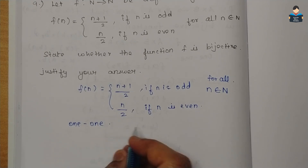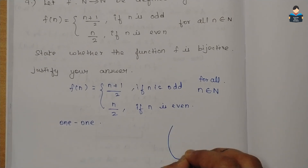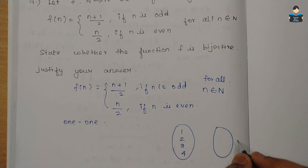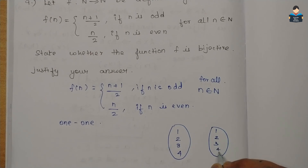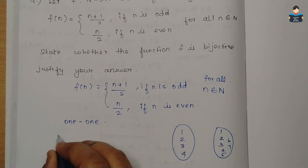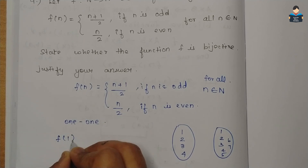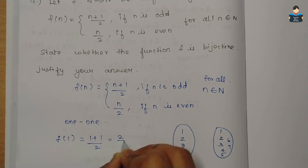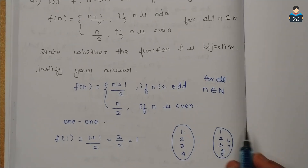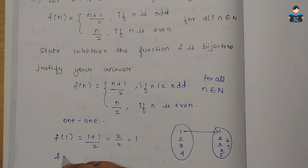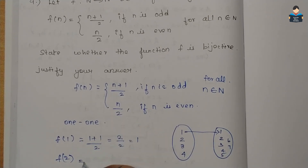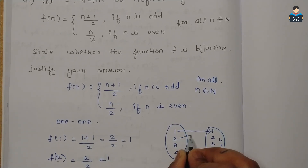For the one-to-one check, we use an arrow diagram. Natural numbers N = {1, 2, 3, 4, ...}. Substituting n = 1 (odd): f(1) = (1+1)/2 = 2/2 = 1. So f(1) = 1. Substituting n = 2 (even): f(2) = 2/2 = 1.